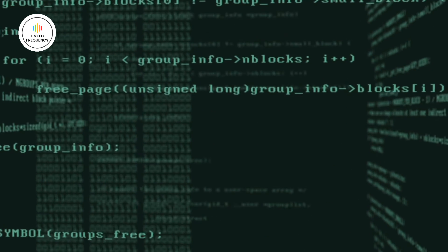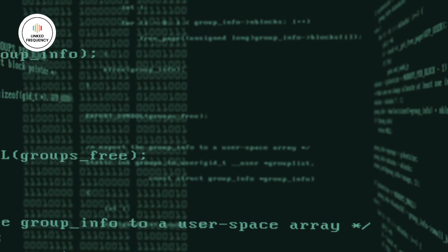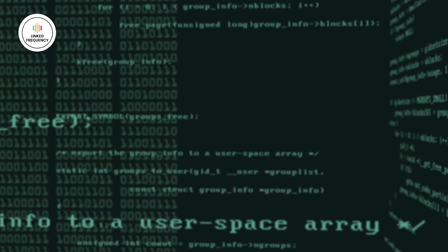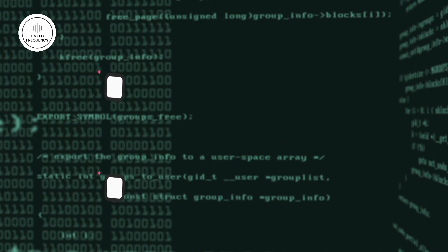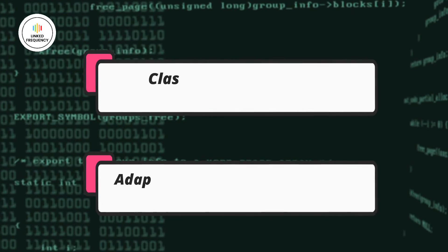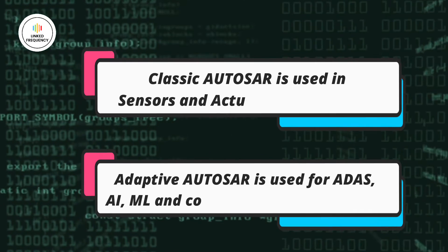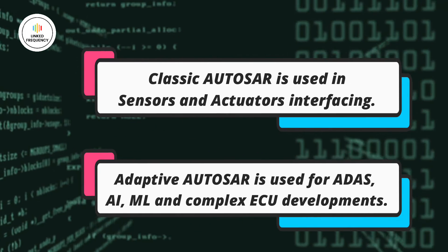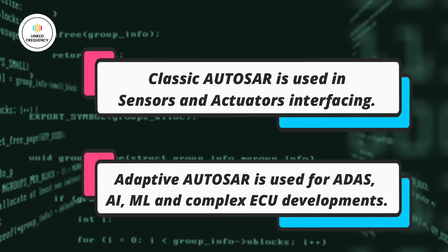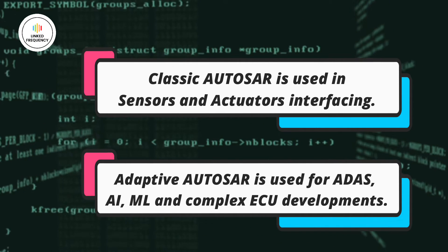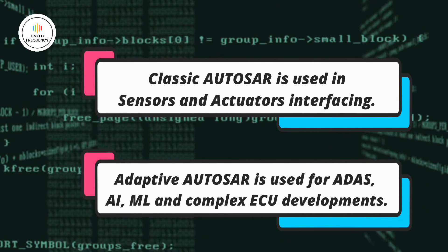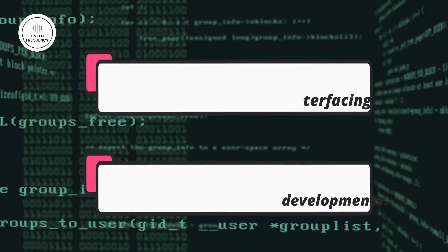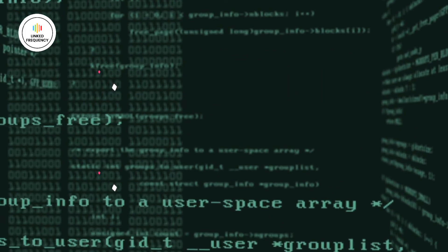Last but not the least, the eleventh difference is use case: classic AUTOSAR is used in sensors and actuators interfacing, whereas adaptive AUTOSAR is used in ADAS, AI, ML, etc. for complex software development.